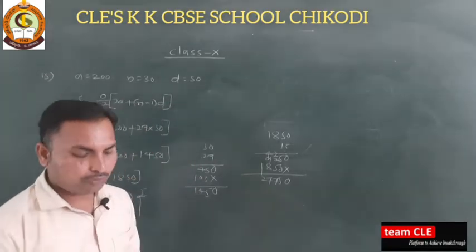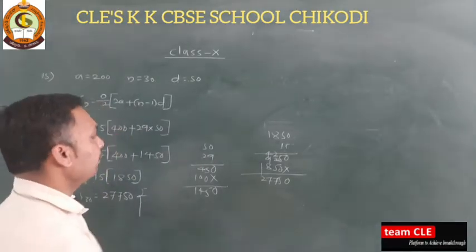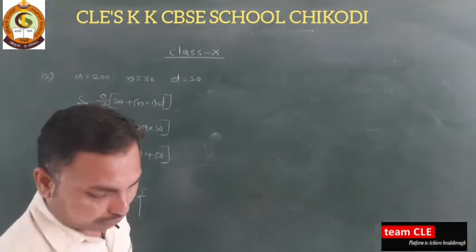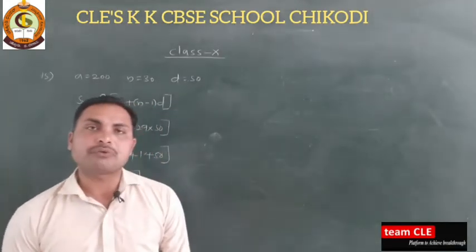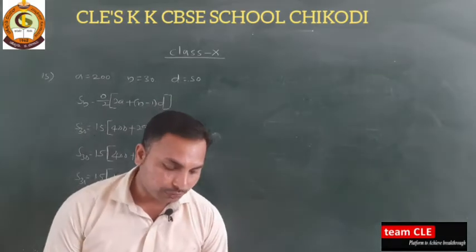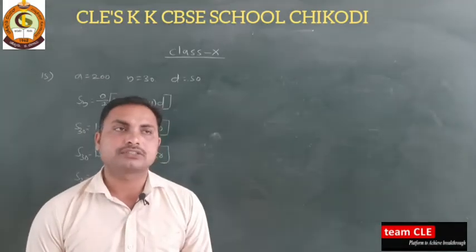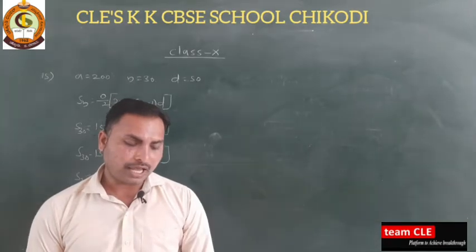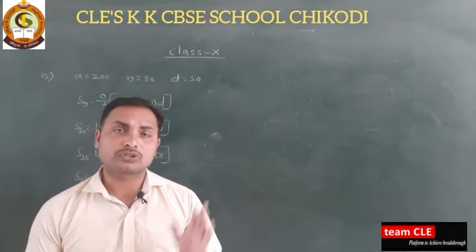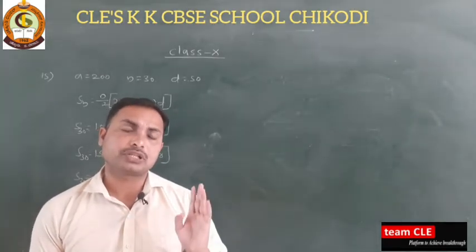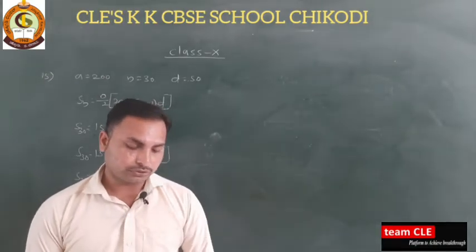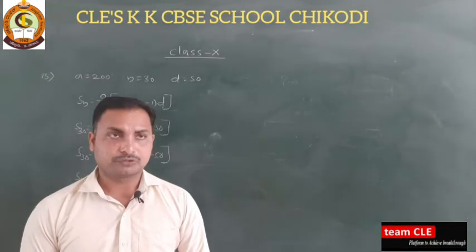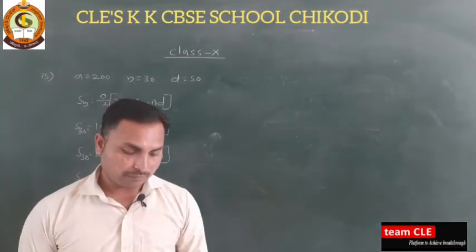Next we have question number 16 — a very simple one. A sum of ₹700 is to be used to give 7 cash prizes to students of a school for their overall academic performance.